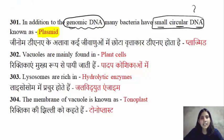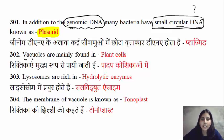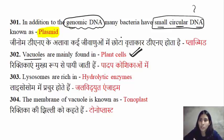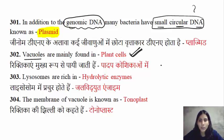The next question is vacuoles. They can be found in which cells? These vacuoles are usually found in plant cells. If you look at the cytoplasm, 80% of the area is made from vacuoles. The animal cells very rarely have vacuoles.